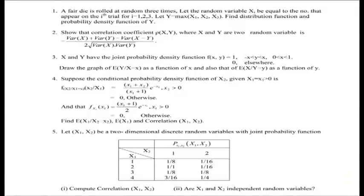Let me now discuss Exercise 6. A fair die is rolled 3 times. Let the random variable X_i be equal to the number that appears on the i-th trial for i = 1, 2, 3. Define Y = max(X1, X2, X3) — the largest number that shows up. Find the distribution function and probability density function of Y.